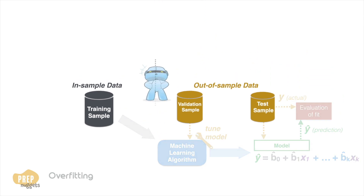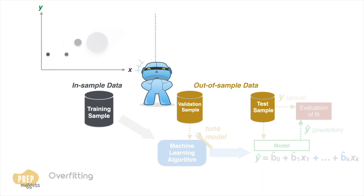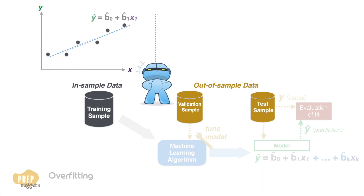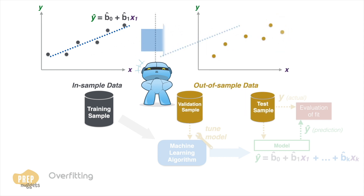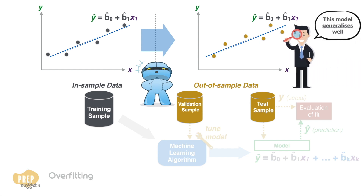When given a bunch of training data, a machine learning algorithm tries its best to explain the variation in the data and builds this explanation into its model. If this model still explains the variations well when given out-of-sample data, we say that the model generalises well. Such a model should have a high R-squared for both in-sample and out-of-sample data.